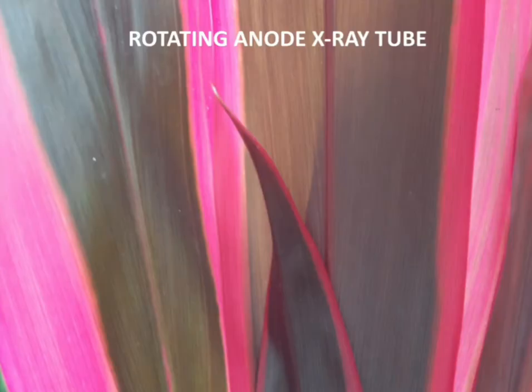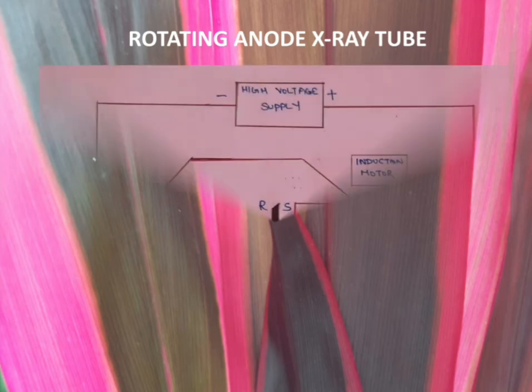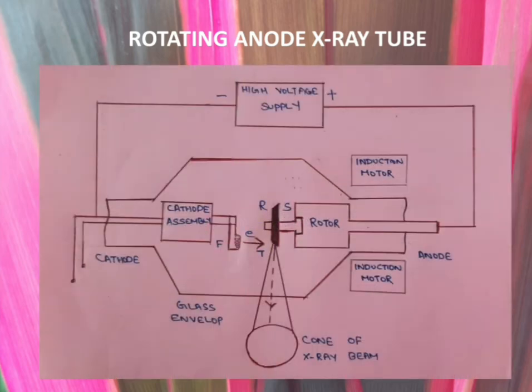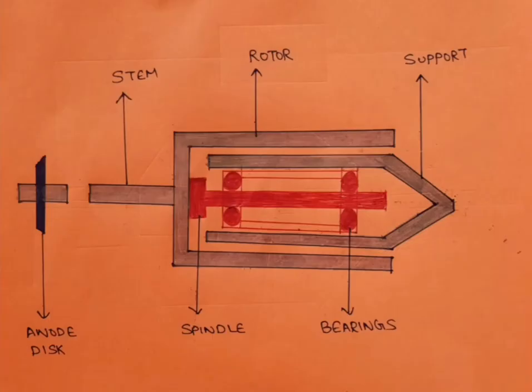Now let's discuss the rotating anode X-ray tube. In this picture you can see the rotating anode X-ray tube — the cathode assembly, the rotor, and the induction motor with which the rotor rotates to rotate the anode disc. This shows the inside of the anode assembly, including the anode disc and the stem.